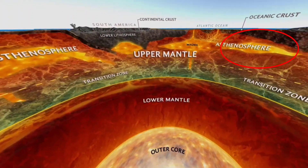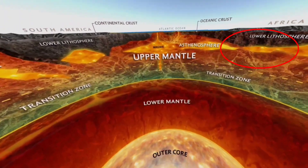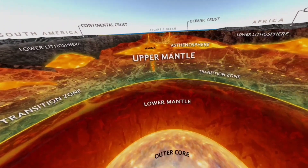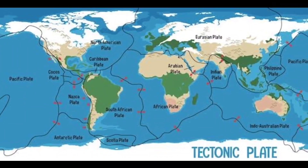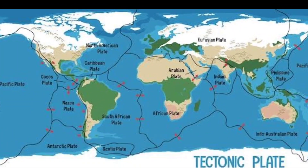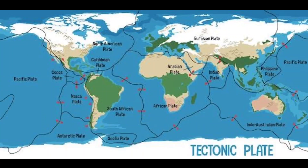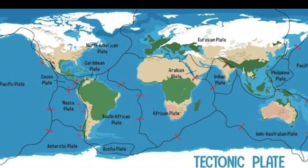The third layer is the crust — the surface layer and thinnest layer — which is divided into various sections known as tectonic plates. These tectonic plates are arranged like a jigsaw puzzle.